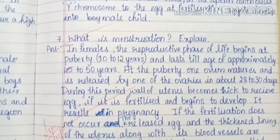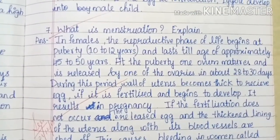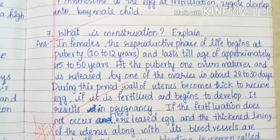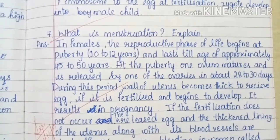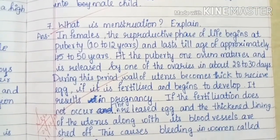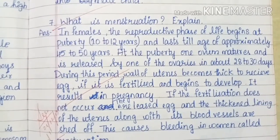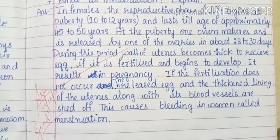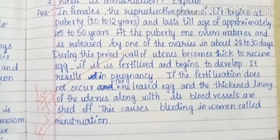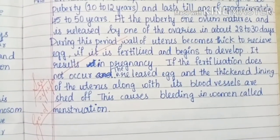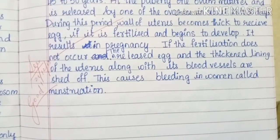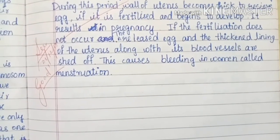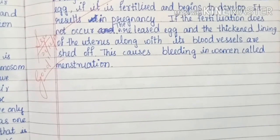What is menstruation? Explain. In females, the reproductive phase of life begins at puberty, around 10 to 12 years, and lasts till approximately 45 to 50 years. At puberty, one ovum matures and is released by one of the ovaries in about 28 to 30 days. During this period, the wall of the uterus becomes thick to receive the egg. If it is fertilized and begins to develop, it results in pregnancy. If fertilization does not occur, the released egg and the thickened lining of the uterus along with its blood vessels are shed. This causes bleeding in women called menstruation.